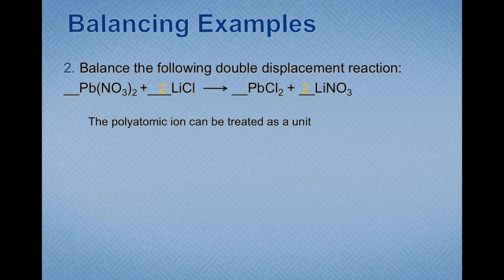I encourage you to check your work. We've got one lead in the reactants and one in the products, two nitrates in the reactants and two in the products, two lithium in the reactants and two in the products, and two chlorine in the reactants and two in the products. Just make sure you go through each element because it's easy to make mistakes when doing these.